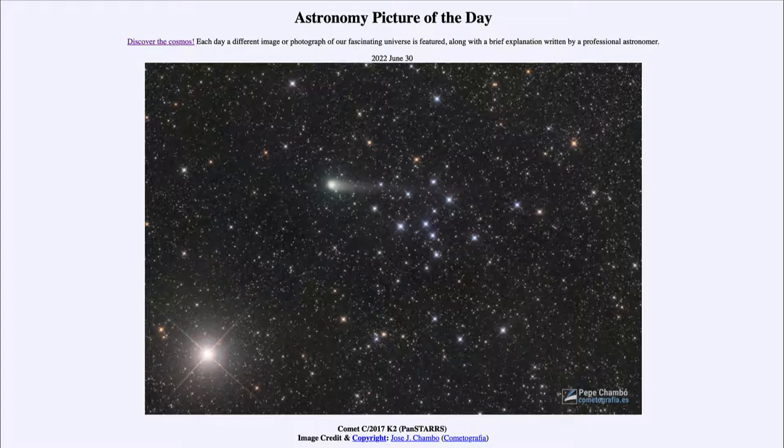But when that material is vaporized off the nucleus, it forms a much larger and brighter area around it, hiding the nucleus but allowing us to see the comet itself.